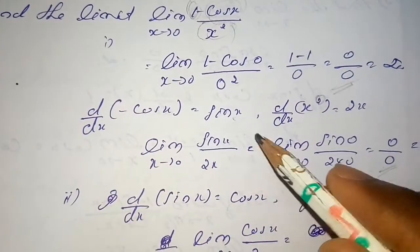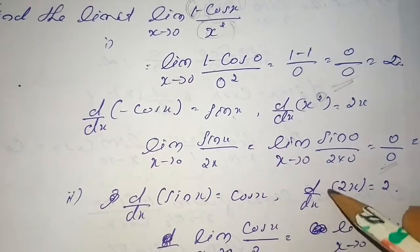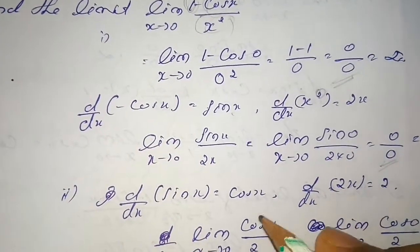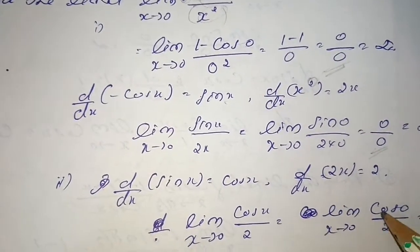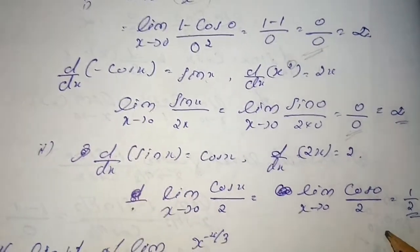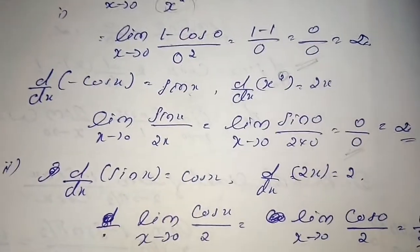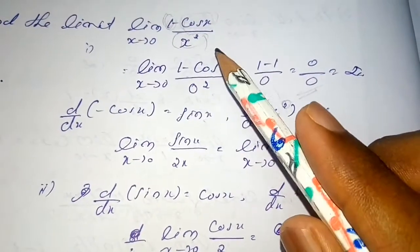Derivative of sin x is cos x, and derivative of 2x is 2, so we get cos x/2. By applying the limit, cos 0/2 = 1/2. We found a finite solution: limit x tends to 0 of (1 - cos x)/x² equals 1/2.